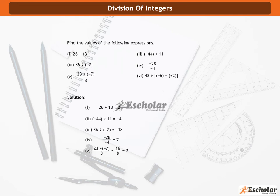23 plus minus 7, divided by 8, is equal to 16 by 8, is equal to 2. 48 divided by minus 6 minus plus 2 is equal to 48 divided by minus 8, is equal to minus 6.